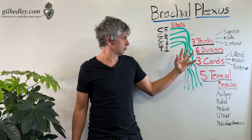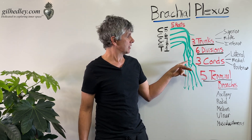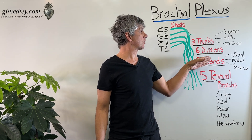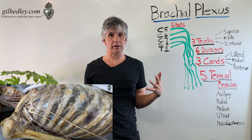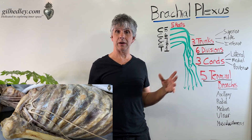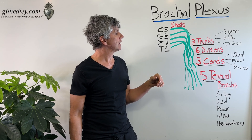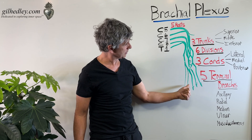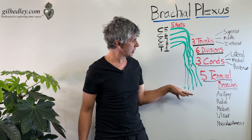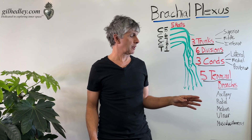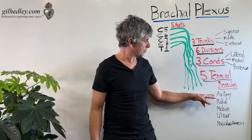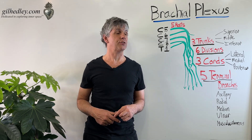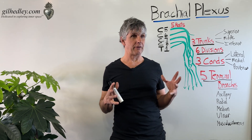The six divisions recombine amongst each other to form the three chords that we played out with our arms. Those three chords are lateral, medial, and posterior. The posterior chord is kind of famous — it turns into the radial nerve. The lateral and the medial kind of recombine to create the median nerve. People might list the terminal branches differently, but axillary, radial, medial, ulnar, and musculocutaneous would be the famous terminal branches.